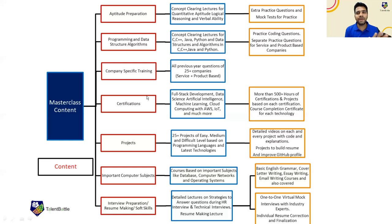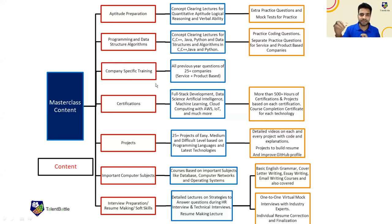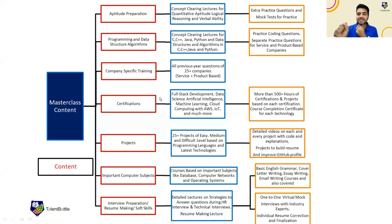We provide training for all four languages along with data structures in each language, and you will get multiple practice coding statements. Next is company-specific training — stage one is aptitude and foundation of the technical part. Company-specific training will cover 25 plus company-specific previous year questions for service-based and product-based companies. Next is certification, where we focus on profile building: full stack, data science, AIML, IOT, cloud computing, AWS — everything is involved. You will also get 25 plus projects at easy, medium, and difficult levels. Important computer science subjects like computer networks, operating systems, and databases are also included, along with interview-related preparation sessions.